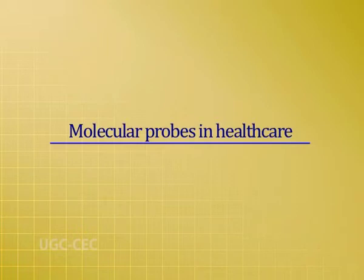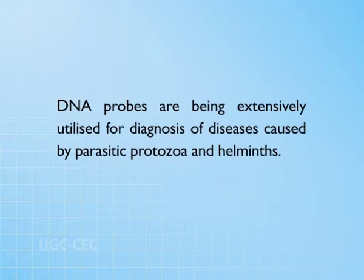In-situ hybridization is a technique which permits detection of DNA or RNA sequences in cell smears, tissue sections, and metaphase chromosome spreads. The method is based on formation of double-stranded hybrid molecules between the DNA or RNA target sequence and the probe. DNA probes are being extensively utilized for diagnosis of diseases caused by parasitic protozoa and helminths. They are also used for antenatal diagnosis of congenital diseases to allow advice on abortion of fetus if desired. Probes have been designed for diagnosis of a number of sexually transmitted diseases, and readymade DNA probes for herpesviruses and other human, animal, and plant viruses are available.